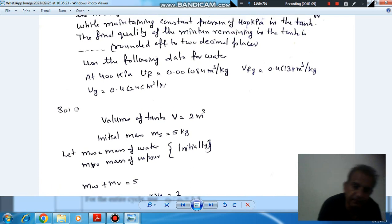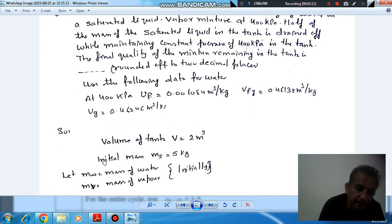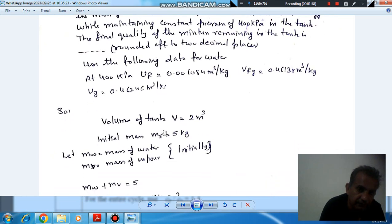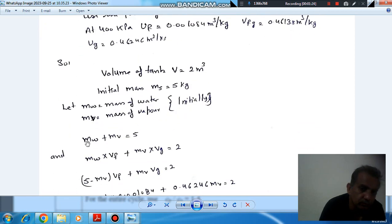So here it is given the total volume of tank is 2 meter cube, and initial mass of steam MS is 5 kg. And this steam consists of mass of water and mass of water vapor. So MW is mass of water and MWV is mass of water vapor. So then MW plus MWV will be equal to 5.